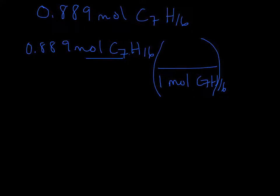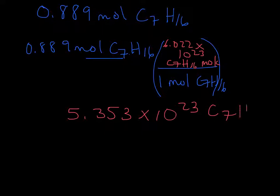All right, Avogadro's number, so 6.022 times 10 to the 23. And that's C7H16 molecules. All right, so now let's go ahead and do the math with that. So we're going to take our 0.889 moles, and we're going to multiply it by Avogadro's number, 6.022 times 10 to the 23rd. And then we're going to end up with 5.353 times 10 to the 23rd heptane molecules.